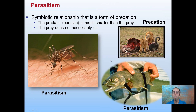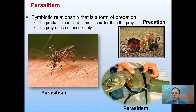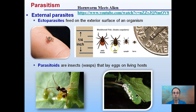Parasitism is a symbiotic relationship that is a form of predation. The predator or parasite is much smaller than the prey, and the prey does not necessarily die. Examples include the mosquito and the human, the sea lamprey and the fish, and the lion and the wildebeest. Ectoparasites feed on the exterior surface of an organism — for example, ticks feeding on us are ectoparasites because they're feeding on our surface.